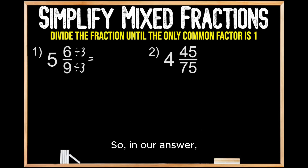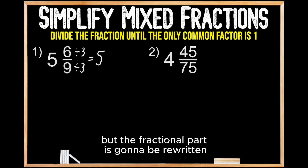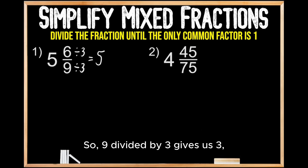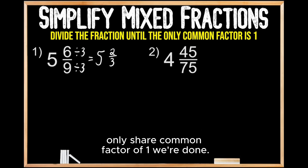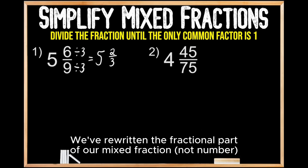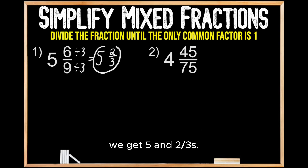In our answer, our five is going to remain the same because the value of our whole number hasn't changed, but the fractional part is going to be rewritten in smaller units. Nine divided by three gives us three, and six divided by three gives us two. Since both two and three only share a common factor of one, we're done. When we rewrite five and six-ninths in its lowest possible terms, we get five and two-thirds.